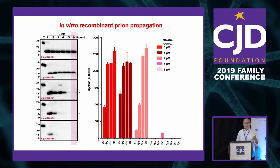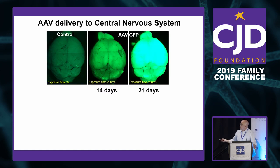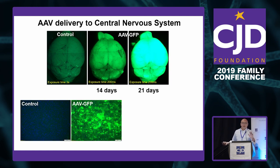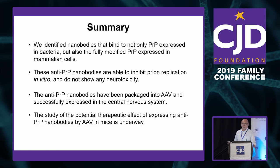We then tried to express them in vivo. As a control we used green fluorescent protein from jellyfish — injected IV into mice — and 21 days after injection you can see green fluorescence throughout the brain, showing expression in the majority of neurons. For the nanobody, we confirmed expression by Western blot, and it expressed quite well. We're now going to run the in vivo prion disease test to see if it works against prion infection, at least in mouse.